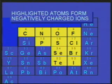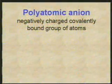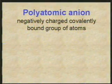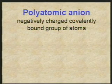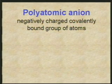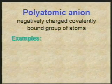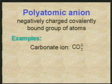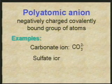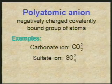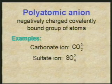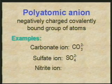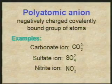In lecture you have also studied polyatomic ions. A polyatomic anion is a covalently bonded group of atoms that have a negative charge. Some familiar polyatomic ions would be the carbonate ion CO3 with a negative 2 charge, the sulfate ion SO4 with a negative 2 charge, and the nitrate ion NO2 with a negative 1 charge.